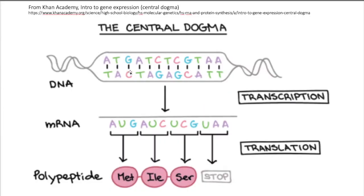Genomes are made up of DNA. DNA is double-stranded. This shows a forward strand on top, a reverse strand on the bottom. Notice that A's bind to T's and G's bind to C's.